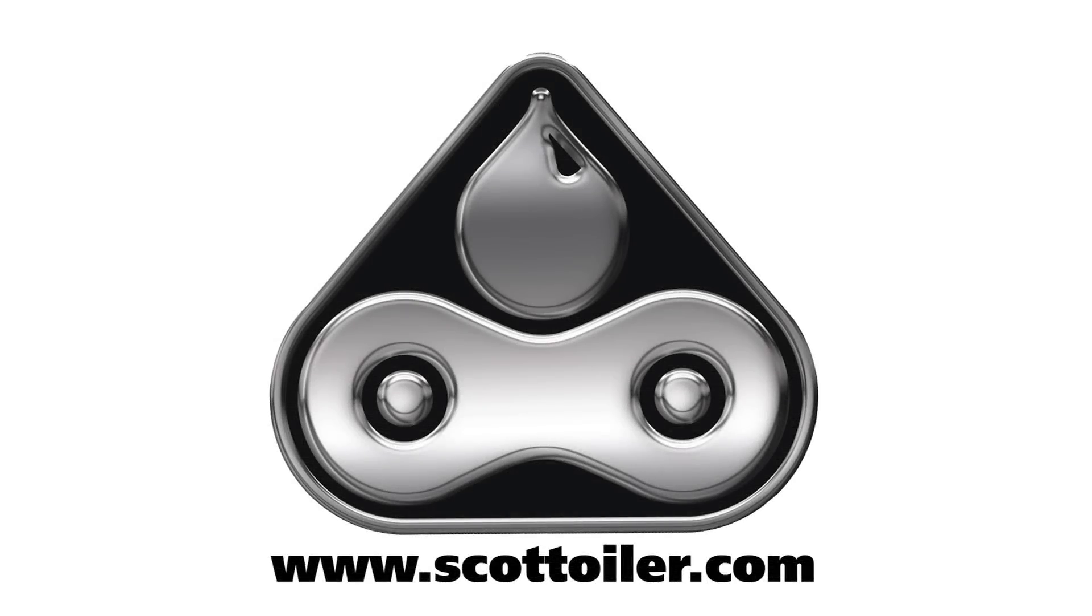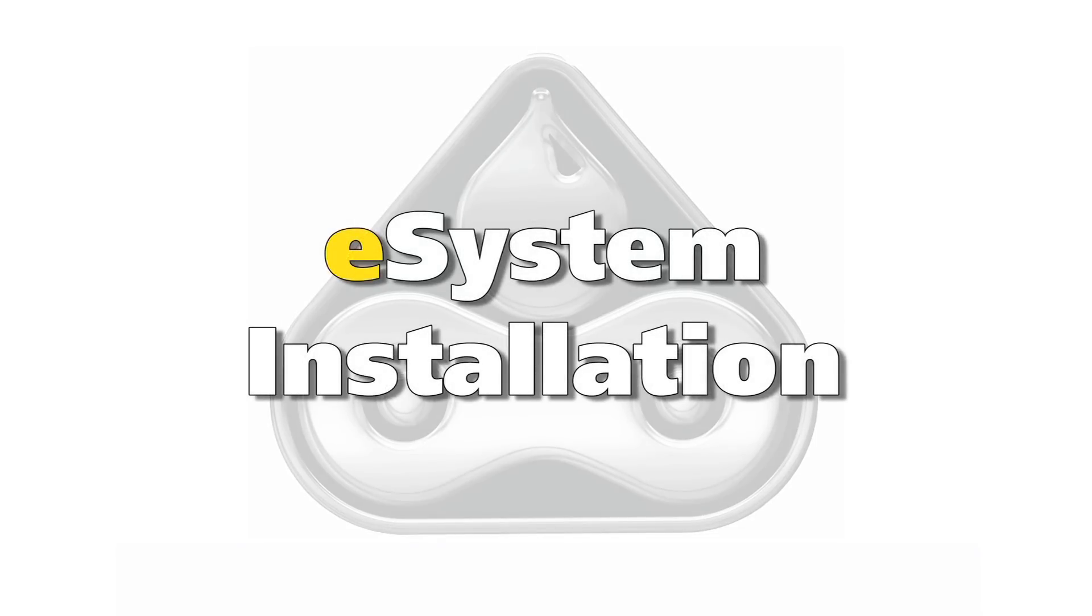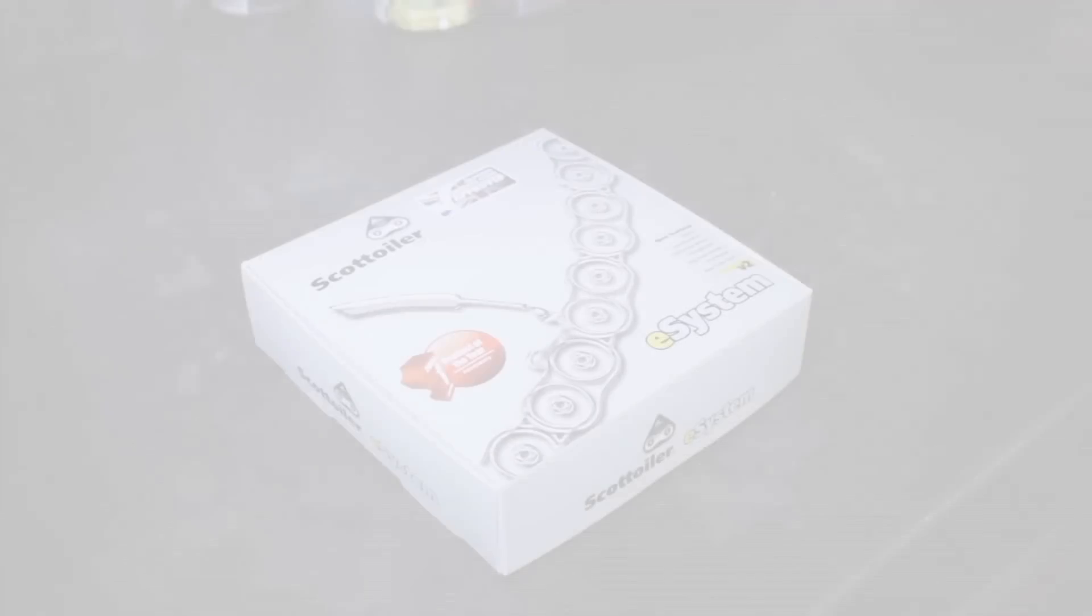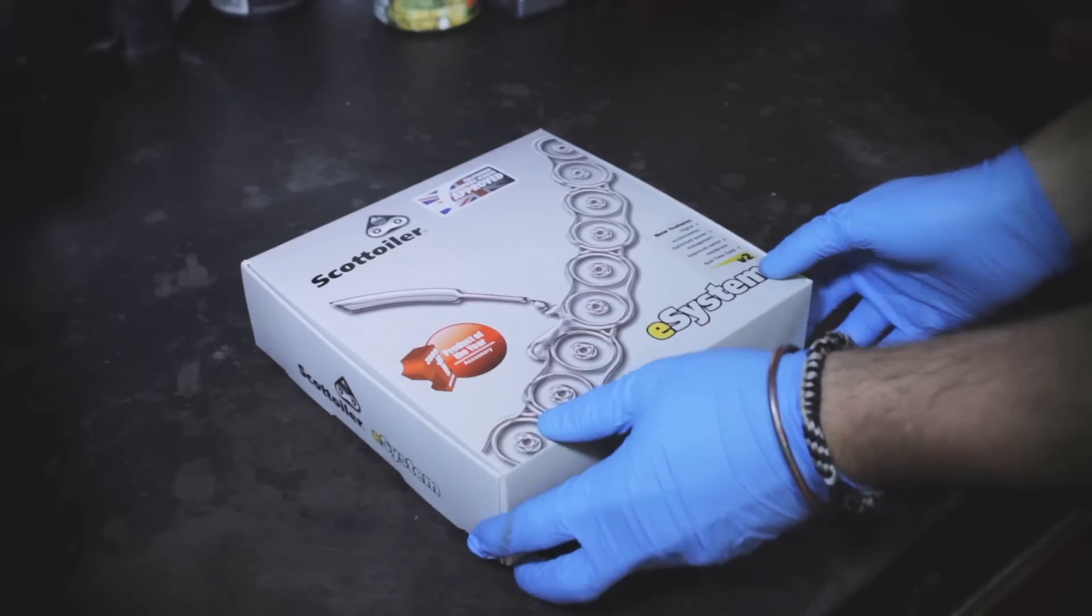The Scott Euler E-System oils your chain automatically as you ride. Unlike the V-System, the E-System electronically pumps oil to the chain, so there is no need to tap into the bike's vacuum. The E-System simply connects straight on to the battery.